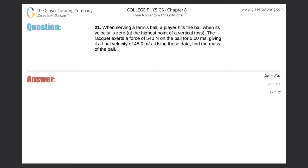Number 21. When serving a tennis ball, a player hits the ball when its velocity is zero, at the highest point of a vertical toss. The racket exerts a force of 540 newtons on the ball for 5 milliseconds, giving it a final velocity of 45 meters per second. Using these data, find the mass of the ball.